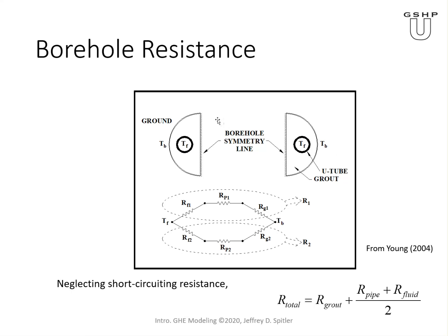A slightly more elaborate diagram shows the two halves, assuming no heat transfer between them, which is the case when we're estimating the mean fluid temperature. In that case there's the convective resistance of the inside wall of the pipe, the resistance of the pipe itself, and then the resistance of the grout between the outer edge of the pipe wall and the borehole wall. The total borehole resistance equals the grout resistance from the outside of both tubes to the borehole wall, plus the resistance of one pipe and one convective resistance inside, divided by two because there are two in parallel.